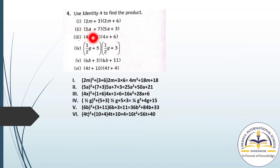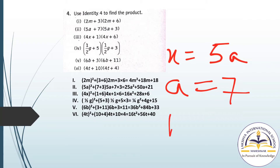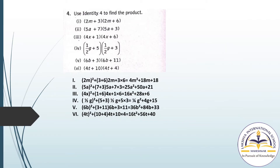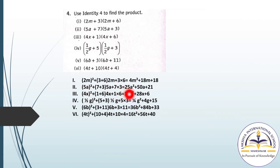For question number 2: (5A + 7) and (5A + 3). Here X equals 5A, A equals 7, and B equals 3. Applying Identity 4: (5A)² plus (7 + 3) into 5A plus 7 into 3. (5A)² gives 25A square, 10 into 5A gives 50A, and 7 into 3 is 21. Answer: 25A square plus 50A plus 21.